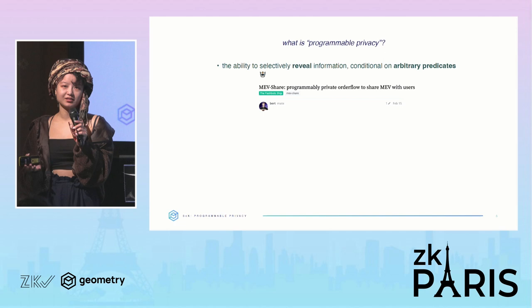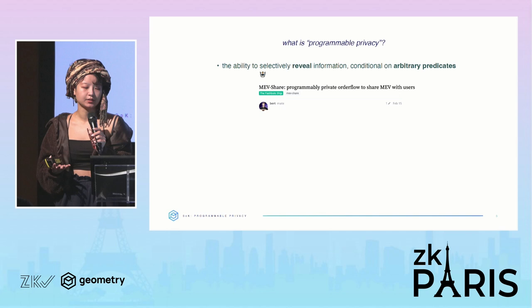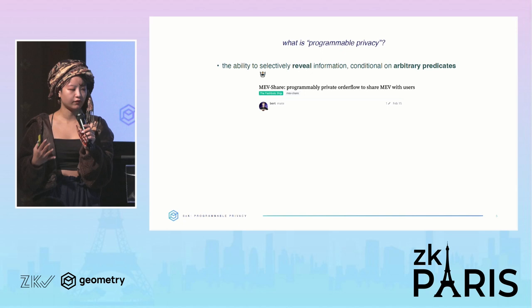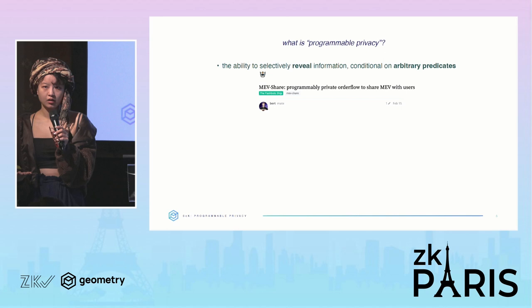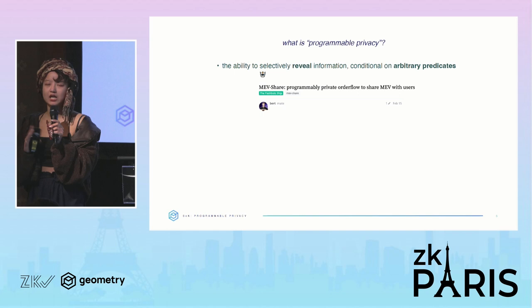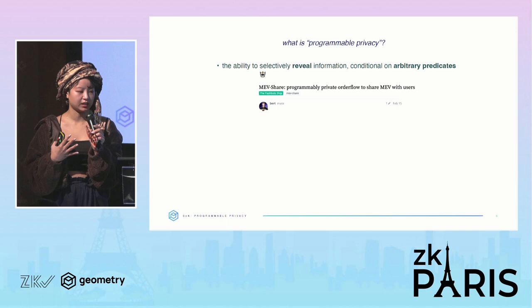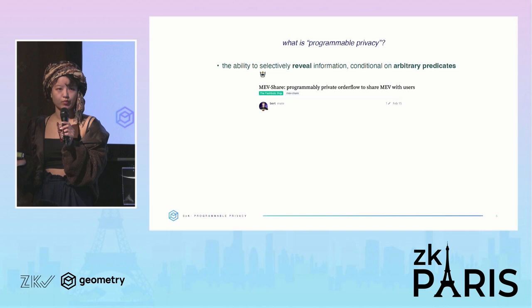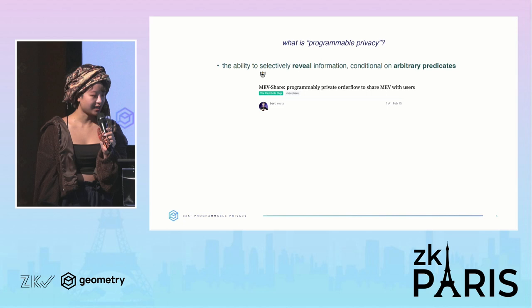Recently, programmable privacy has become a trending phrase because the Flashbots people have been saying it. In the Flashbots context, what they mean is the ability for a user to conditionally reveal their transaction to a searcher. For example, if I have a transaction that I know you're going to frontrun and profit from, I'm going to reveal it to you conditional on you sharing some of that profit with me. So 'programmable' here refers to the ability to encumber your transaction or your data on arbitrary predicates of your choice.